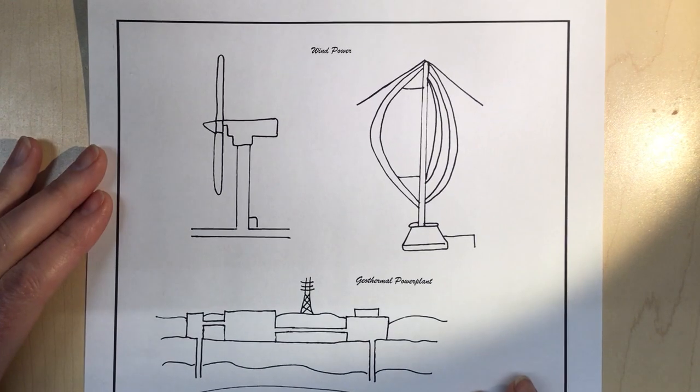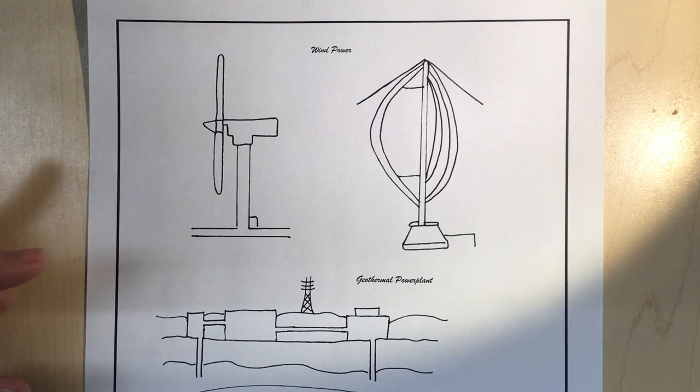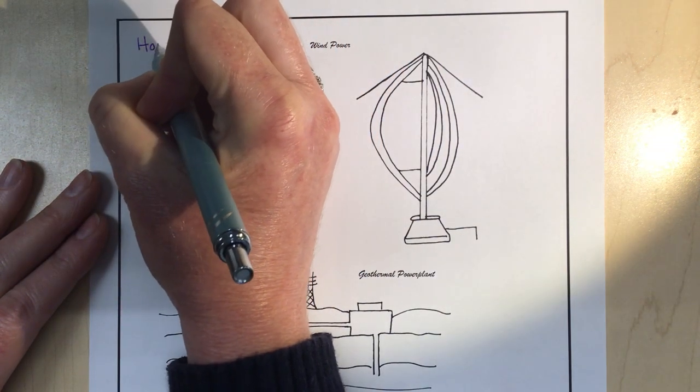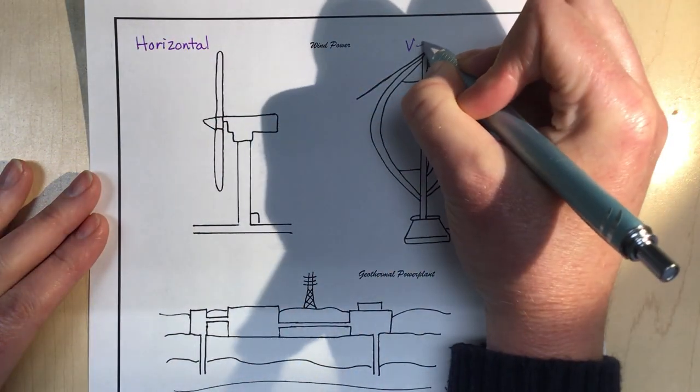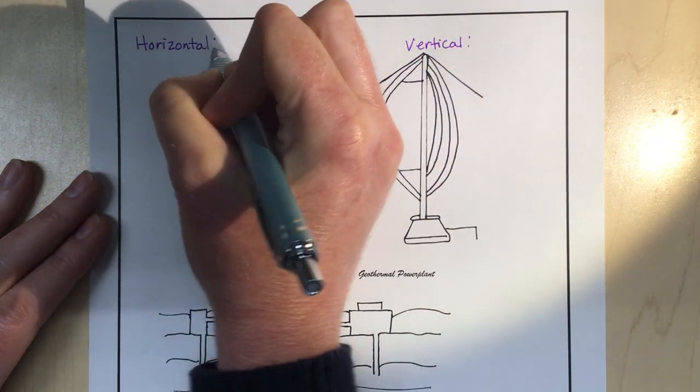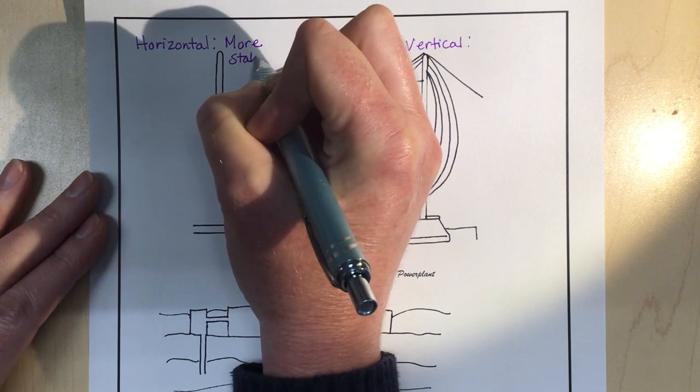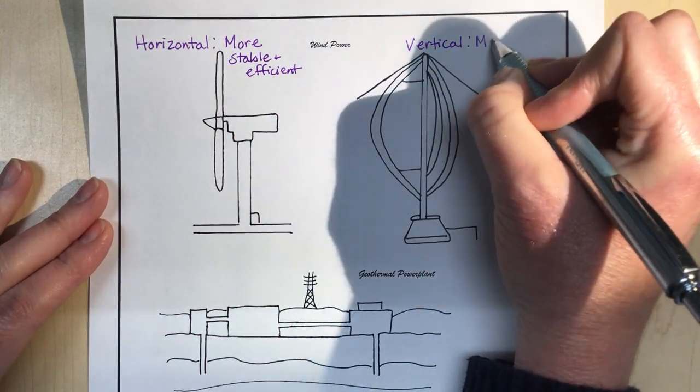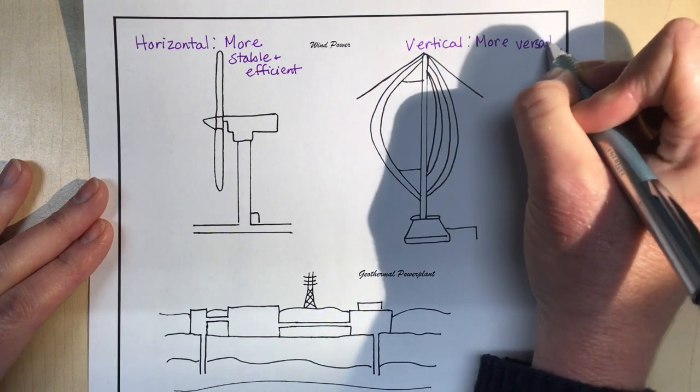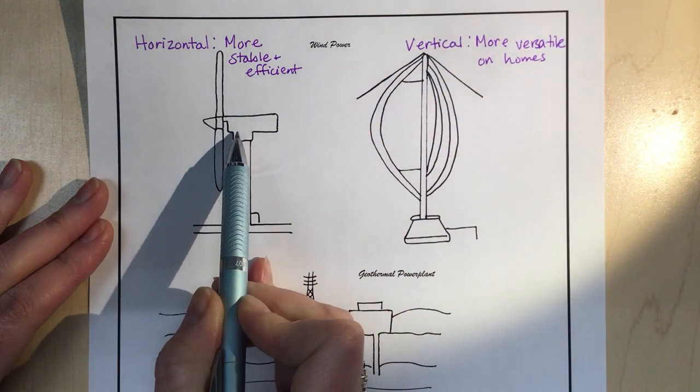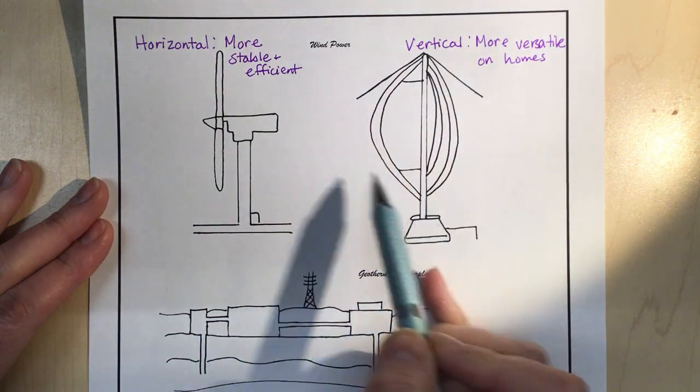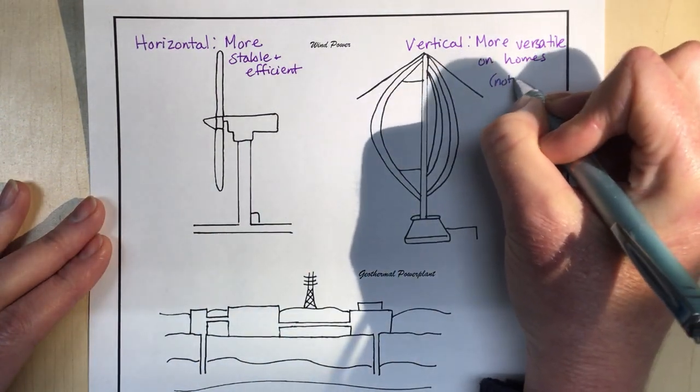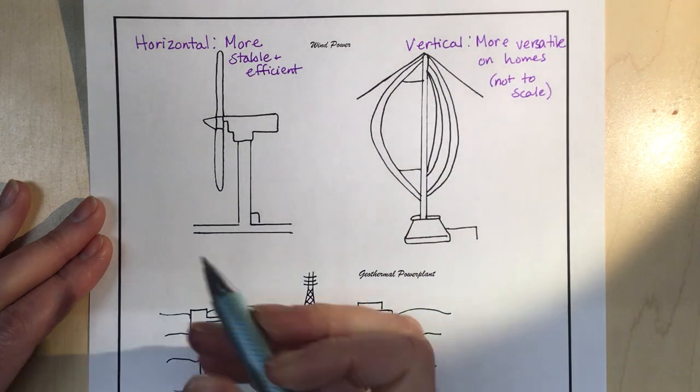Okay, the next power source is wind power. With wind power we have a couple of different models of windmills. There's actually more than this, but these are just the two main ones. We have a horizontal model and we have a vertical model. So the horizontal is more stable and efficient, and you see these with your big wind farms. The vertical is more versatile on homes and it's actually not this big. This is much bigger than this. This is really small and it can be put on a home. So these are not to scale.